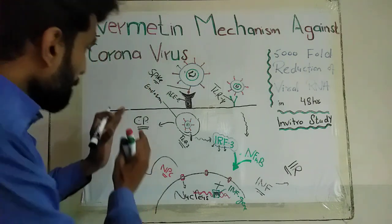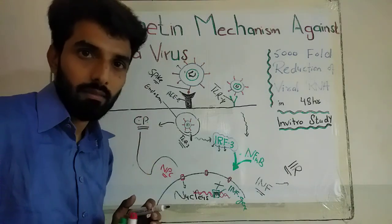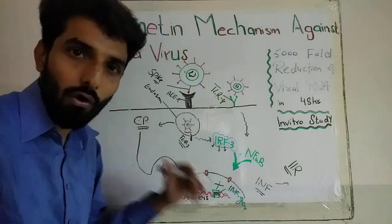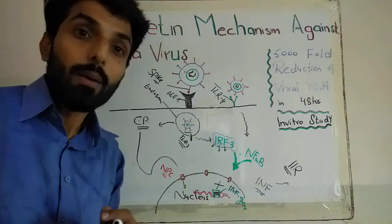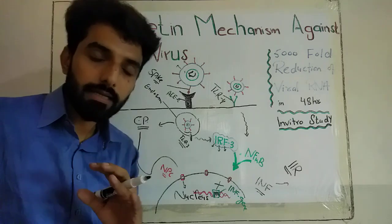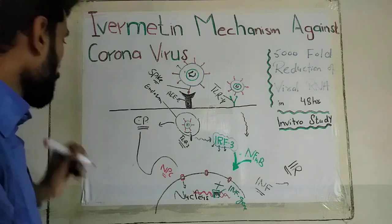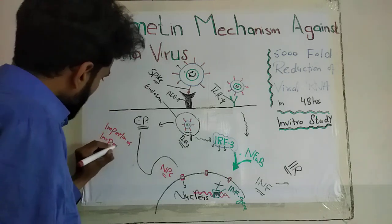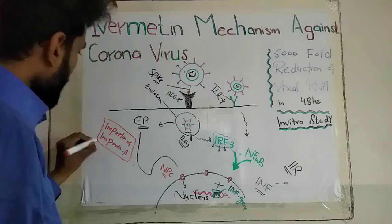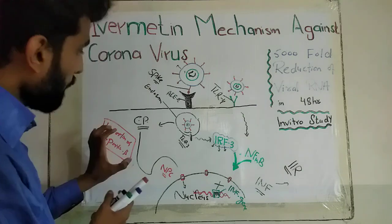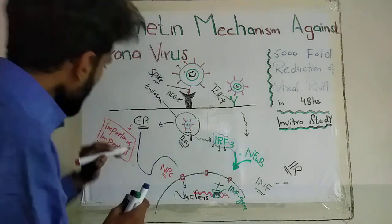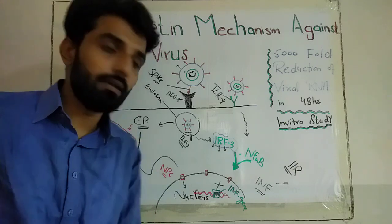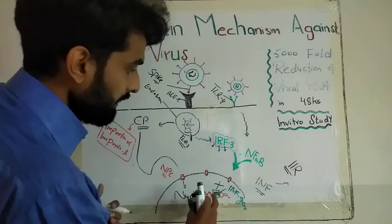There is a problem, however: these capsid proteins cannot get entered into the nucleus on their own through the nuclear pore complex. They need some cargo proteins. The name of those cargo proteins is Importin-alpha and Importin-beta — this is a complex of proteins. The capsid protein binds over this importin complex, and with the help of this complex it gets entered into the nucleus. Once inside the nucleus, it inhibits the antiviral mechanism — it inhibits the expression of interferon.